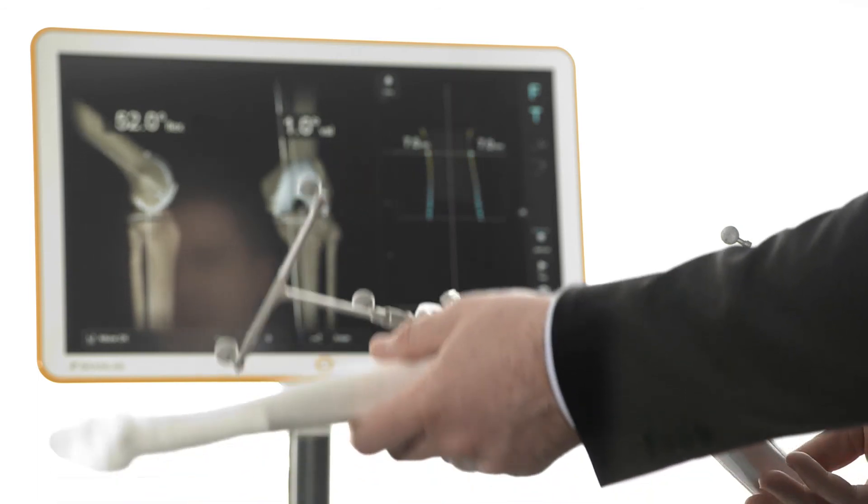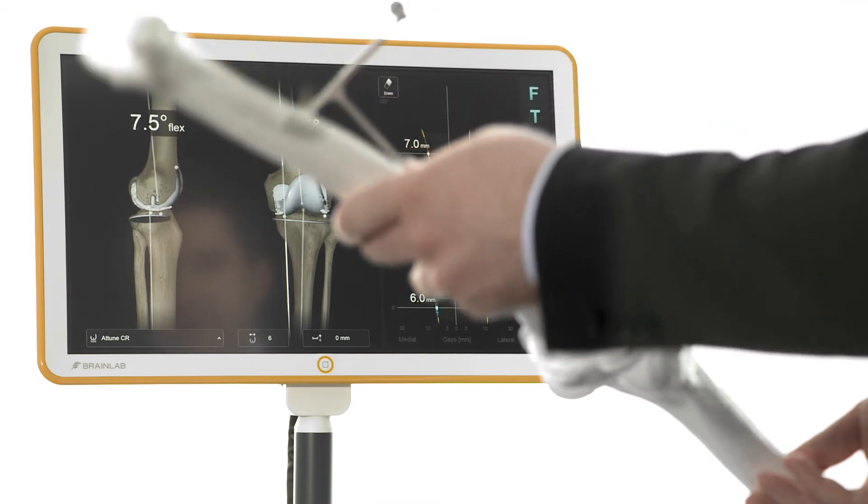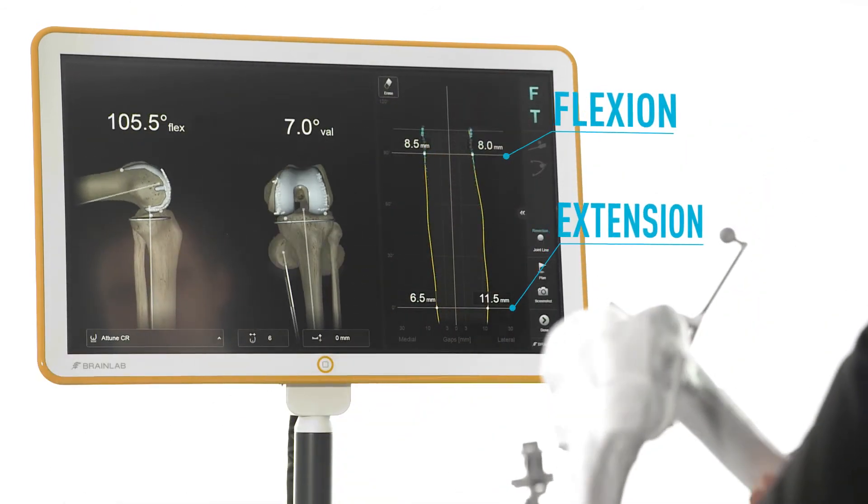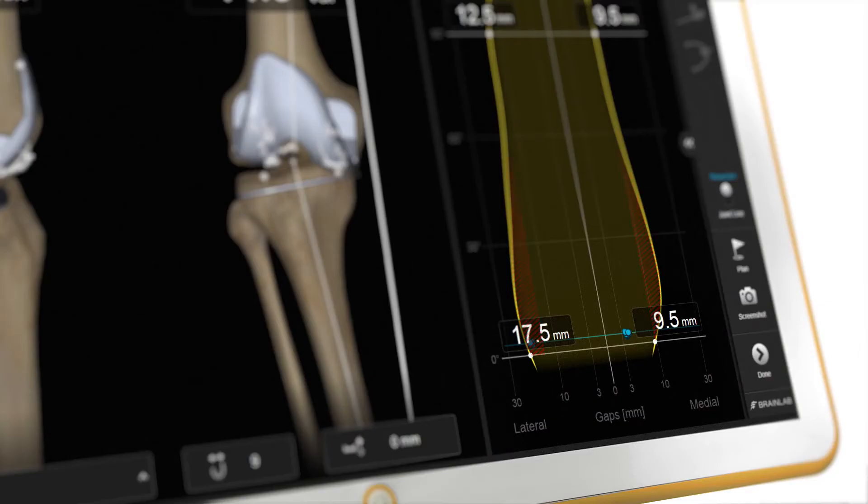Once the registration steps for femur and tibia are finalized, the initial assessment of stability and leg alignment can begin immediately. As the leg is moved from full flexion to extension, the balance graph on the right side of the screen is created, providing information about the stability of the joint based on the selected implant family even before any bone cuts are made. Potential instabilities or deformities that may have an effect on further surgical steps can already be identified at this stage.